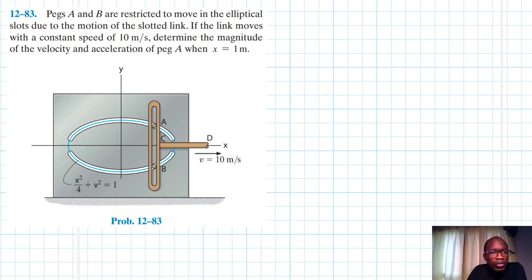Hello, I welcome you all. The problem reads: pegs A and B are restricted to move in the elliptical slots due to the motion of the slotted link. If the link moves with a constant speed of 10 meters per second, determine the magnitude of the velocity and acceleration of peg A when x is equal to 1 meter. This problem is from Engineering Mechanics Dynamics, 14th edition, by R.C. Hibbeler.